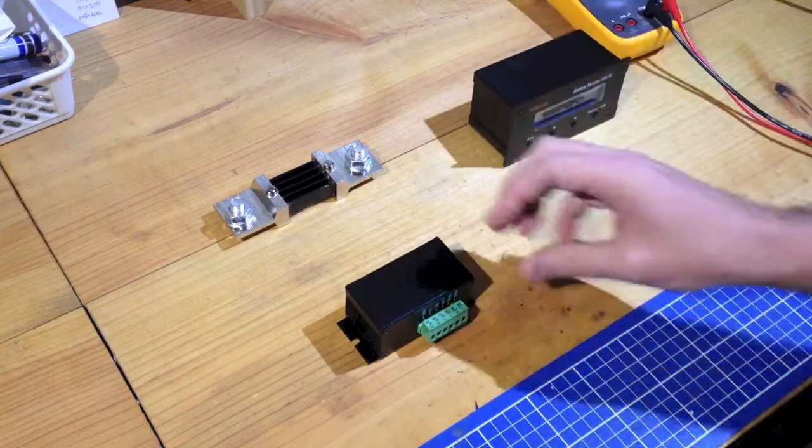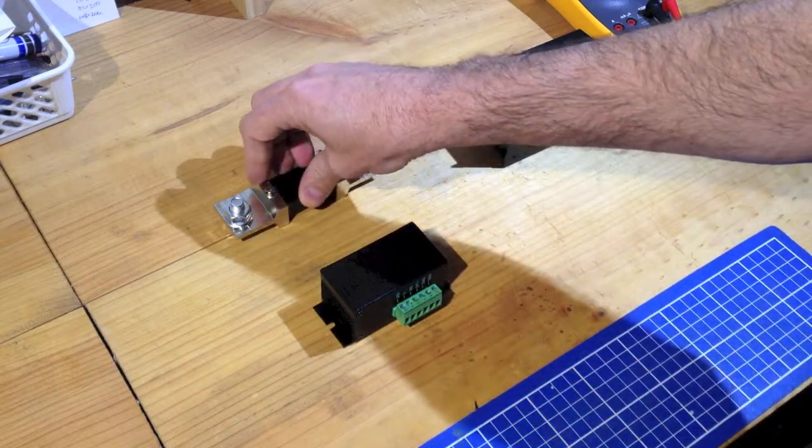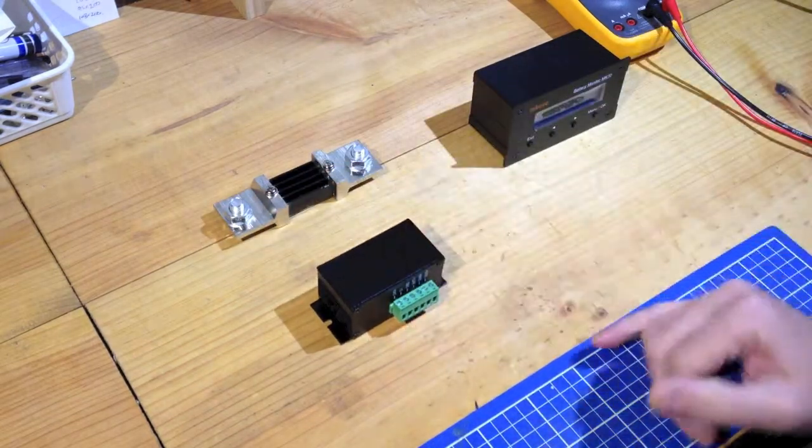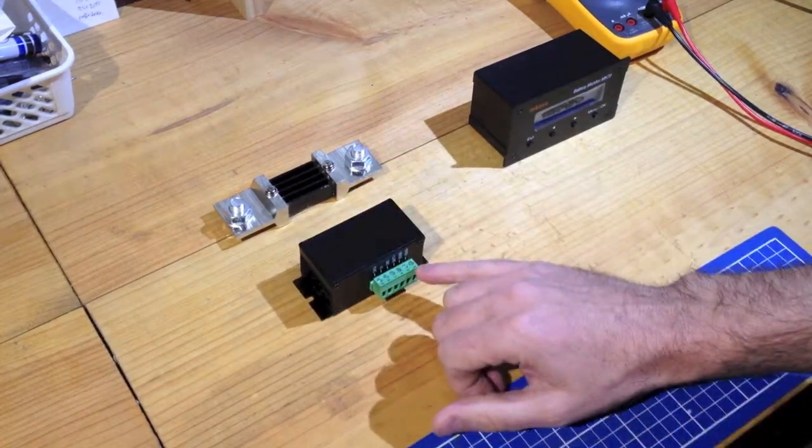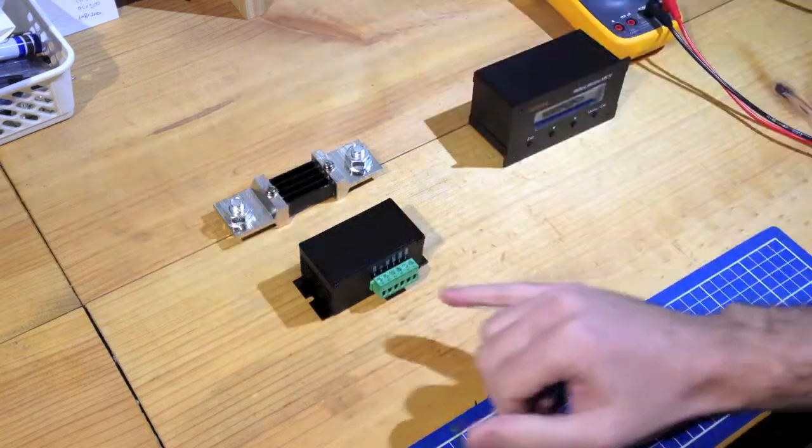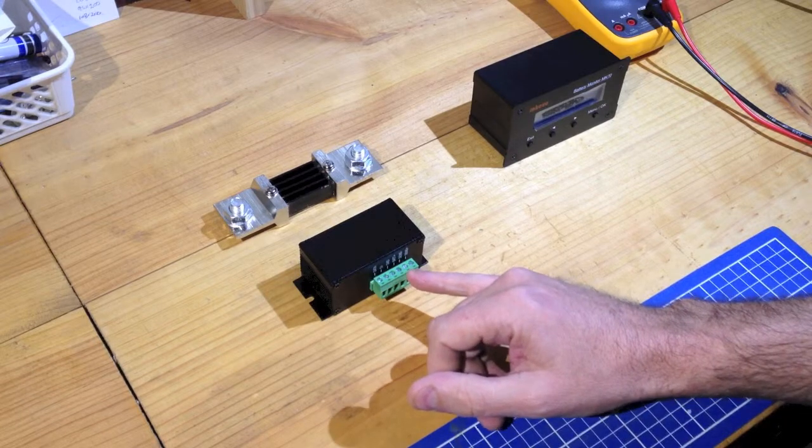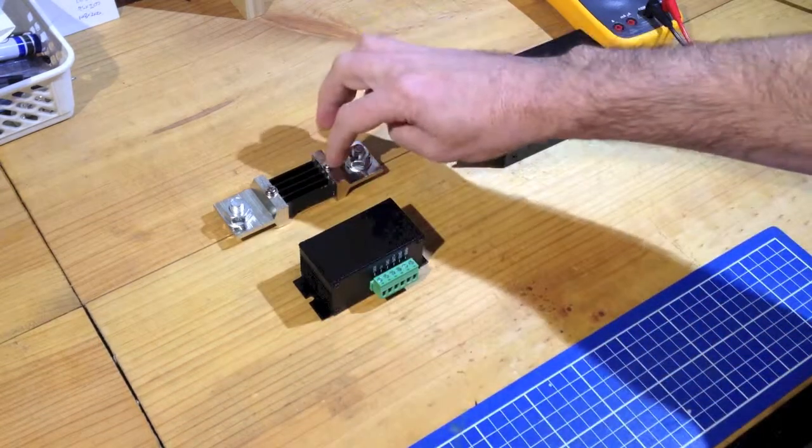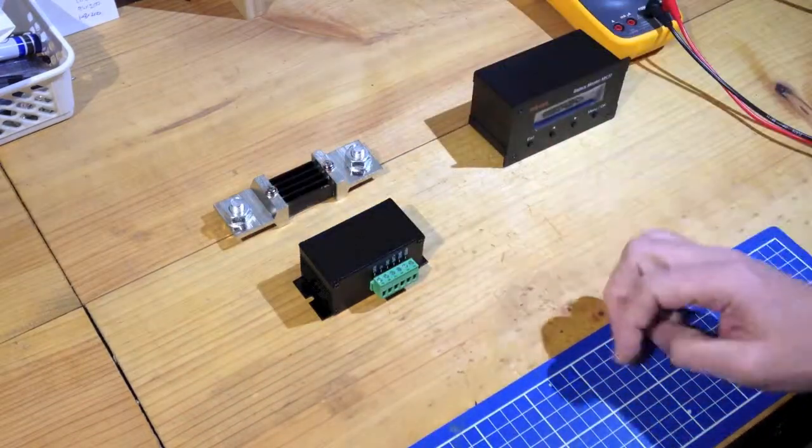So with a connection with the shunt in the positive terminal, the connections are similar. The sense positive line here will connect to this end of the shunt because that's the more positive end of the shunt. The sense negative end of the connection here on the sensor unit would go to this end. That's the more negative because that's the positive end near the positive terminal. That's the more negative side.